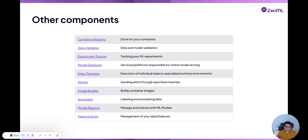There are many other components — I would encourage you to read the docs. Container registries, data validators, experiment trackers, model deployers — they're all very important based on what you're doing. So once you configure these and collect them in a stack, when you run a pipeline, you're running on a particular configuration of tools and infrastructure defined there.